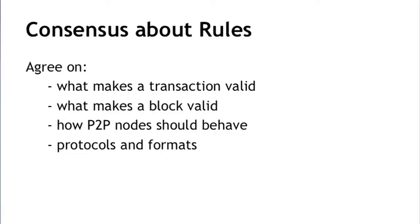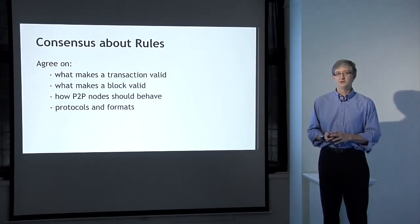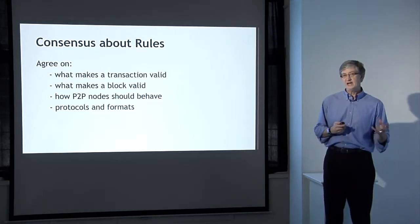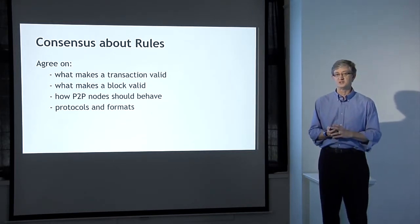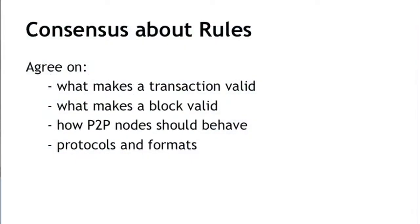There are really three kinds of consensus that have to operate for Bitcoin to be successful. The first kind is a consensus about the rules — things like what makes a transaction valid, how you can tell a valid transaction from an invalid one, what makes a block in the blockchain valid, and how the nodes in the P2P network should behave, interact with each other, and what protocols and data formats are involved in making Bitcoin work.